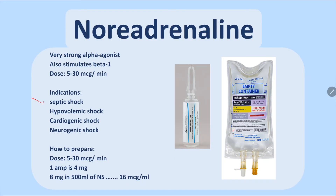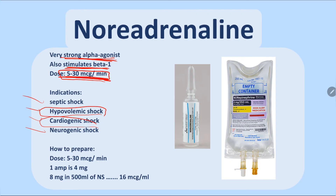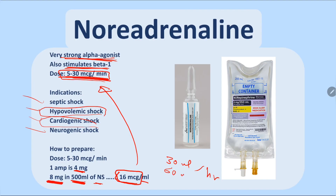Noradrenaline is used for cardiogenic shock, septic shock, and hypovolemic shock. It is a good alpha agonist and also stimulates beta-1 receptors for cardiac contractility; alpha-1 causes vasoconstriction. The dose is 5–30 micrograms per minute. To prepare: use one ampoule of 8 mg (or two ampoules of 4 mg each) in 500 mL normal saline — each mL contains 16 micrograms. Start at 30 mL per hour and titrate up to 60 mL per hour or more as needed.